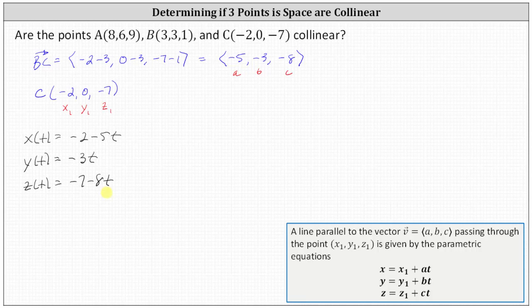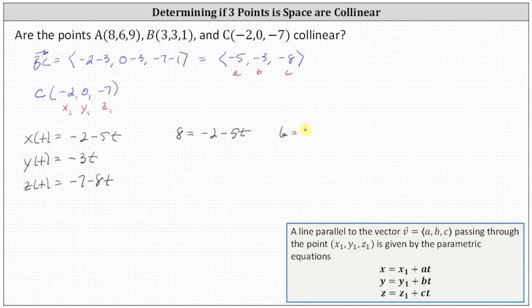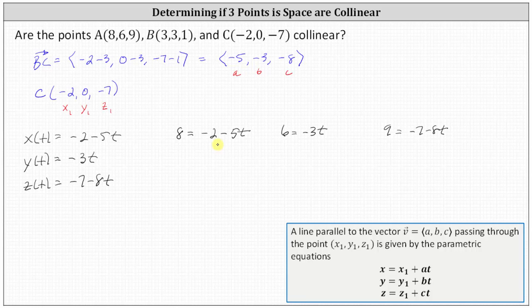Now we need to determine whether point A would be on the line given by these equations. To do this, we set the x coordinate of A, which is eight, equal to x(t): eight equals negative two minus five t. We set the y coordinate of six equal to y(t), which is negative three t. And we set the z coordinate of nine equal to z(t), which is negative seven minus eight t. If point A is on the line and the three points are collinear, we must get the same value of t from all three equations. If we get a different value of t for any equation, point A is not on the line and the three points are not collinear.